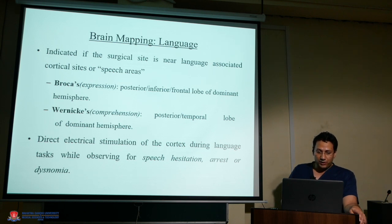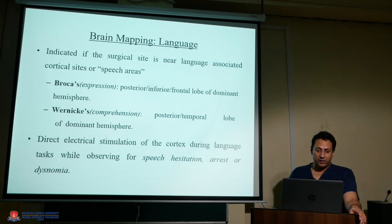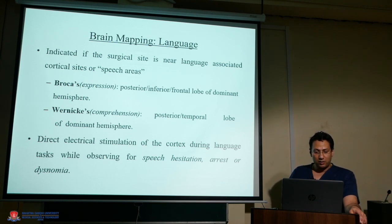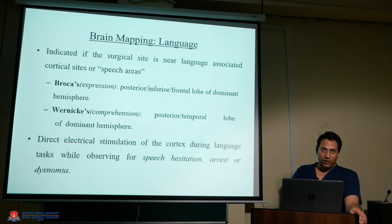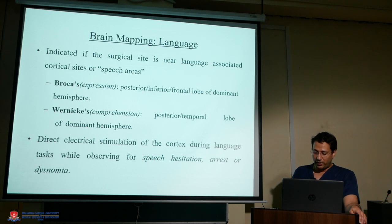Brain mapping of language areas is indicated when the surgical site is near language-associated cortical sites or speech areas — like Broca's area for expression in the posterior-inferior frontal lobe of the dominant hemisphere, and Wernicke's area for comprehension in the posterior temporal lobe of the dominant hemisphere. Direct electrical stimulation of the cortex during a language task is performed while observing for speech hesitation, arrest, or dysnomia.